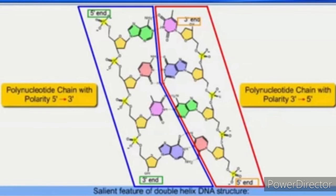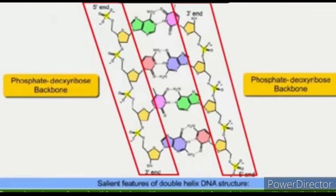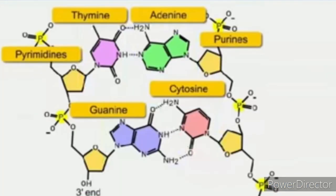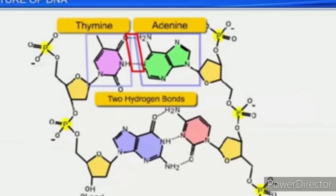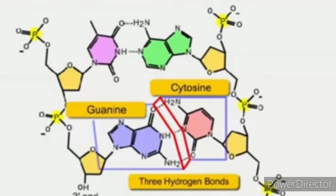The backbone of each polynucleotide chain is formed by repeated units of sugar and phosphate. In the Watson and Crick model, the base of one strand — if purine — always pairs with a pyrimidine of the other strand through hydrogen bonds. This keeps the diameter of the DNA molecule constant. The base pairing is specific: adenine pairs with thymine by two hydrogen bonds, and guanine pairs with cytosine by three hydrogen bonds. This is called complementary base pairing.